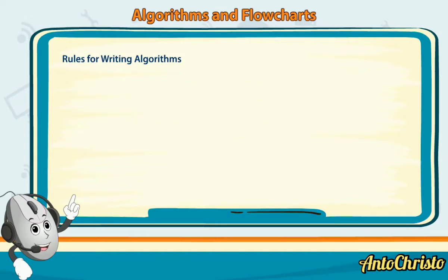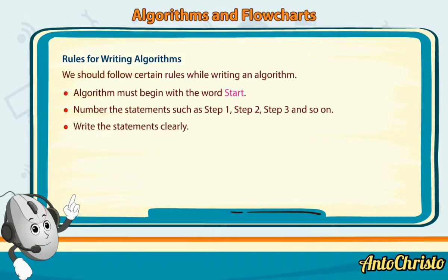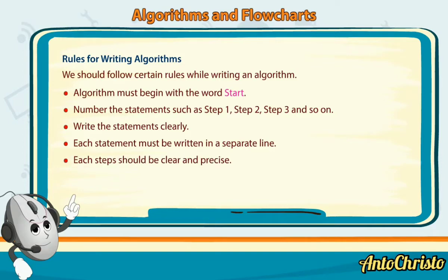Rules for writing algorithms. We should follow certain rules while writing an algorithm. Algorithm must begin with the word start. Number the statements such as step 1, step 2, step 3 and so on. Write the statements clearly. Each statement must be written in a separate line. Each step should be clear and precise. Write the word stop at the end of an algorithm.